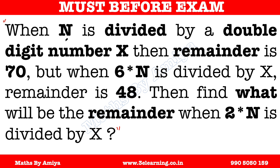What is the question? When N, a number, is divided by a double-digit number X, then the remainder is 70. When 6 times of the same number is divided by the same divisor, the remainder is 48. Then what would be the remainder when 2 times of the same number is divided by the same divisor X?